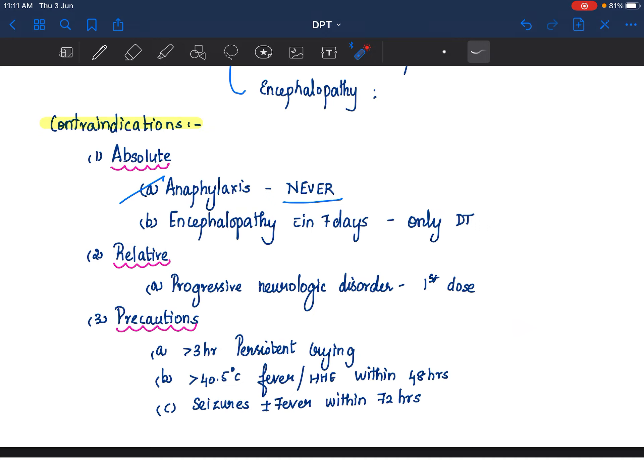The insult is static. The insult that has happened is not an ongoing insult. It is a one point attack and it is not going to continue again. As opposed to a progressive neurological disorder like a neurodegenerative disease where the insult is continuing to happen. So that will be a relative contraindication.